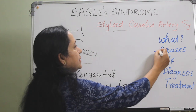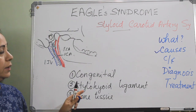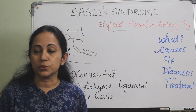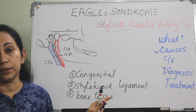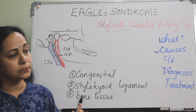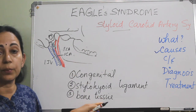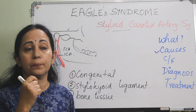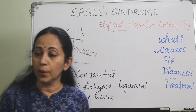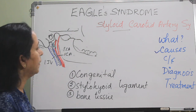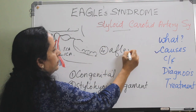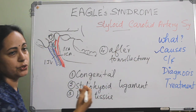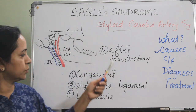Among the causes: one is congenital persistence or formation of an embryonic cartilaginous outgrowth. Then calcification of the stylohyoid ligament can lead to Eagle Syndrome. Also, at the insertion of the stylohyoid ligament there can be formation of bone tissue. The same clinical picture of Eagle Syndrome may also be seen in patients after tonsillectomy.